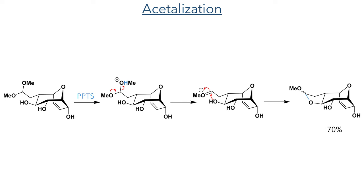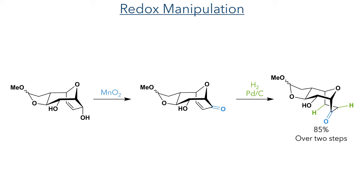With the construction of the 5-membered ring now complete, they then turned their attention to the other side of the molecule. First reacting it with manganese dioxide, they selectively oxidised one of the hydroxyl groups to form an enone. This was then reduced with hydrogen gas over palladium on charcoal to produce the ketone in an 85% yield over two steps.